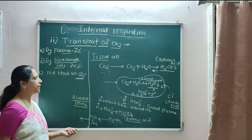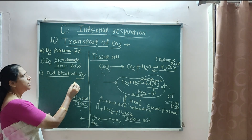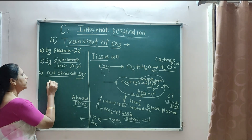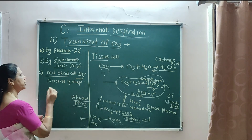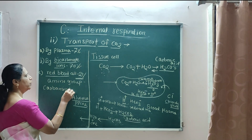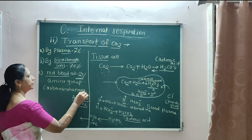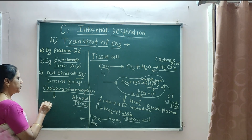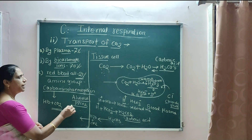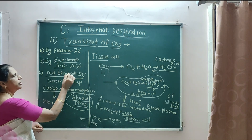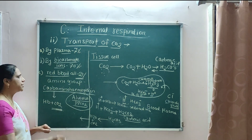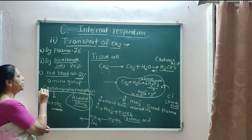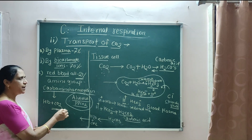The remaining 23% of CO2 is transported by red blood cells. The amino group present in the blood cells combines with CO2 to form carbaminohemoglobin. As carbaminohemoglobin is also unstable, it breaks down into Hb + CO2, and this CO2 is again released into the alveolus.